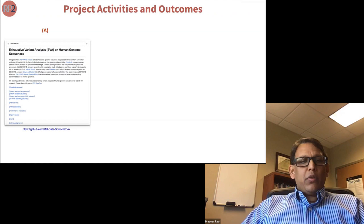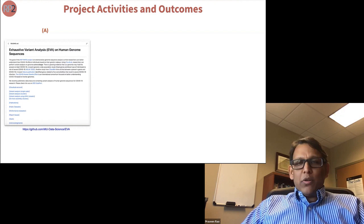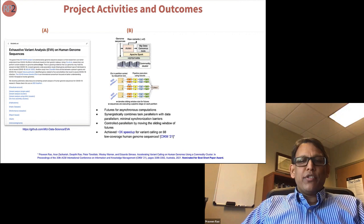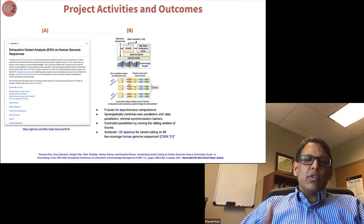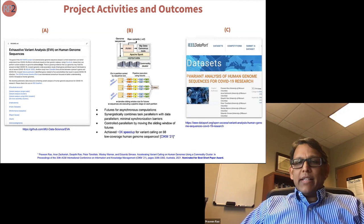Human genomes are very large — tens of gigabytes — requiring significant compute and storage resources that would cost a lot through commercial cloud providers. We achieved three outcomes. First, we have a GitHub site where anyone can sign up with CloudLab and do human genome sequence analysis. Second, we developed a new approach called AVA, which speeds up variant calling pipelines using asynchronous computations combining task parallelism with data parallelism, achieving a 3x speedup on 98 human genome sequences. The paper was recently published and nominated for a best short paper award.